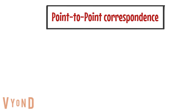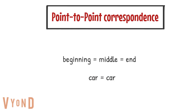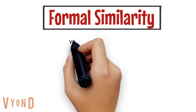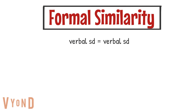Point-to-point correspondence means that the stimulus and the response product match at the beginning, middle, and end. For example, hearing the word 'car' and saying the word 'car' has point-to-point correspondence, but hearing the word 'drive' and saying the word 'car' does not. Formal similarity occurs when the controlling antecedent stimulus and the response share the same sense mode — both visual, both auditory, or both tactile — and they physically resemble each other. In echoics, the SD is verbal and the response is verbal, so that constitutes formal similarity.